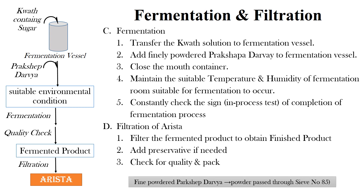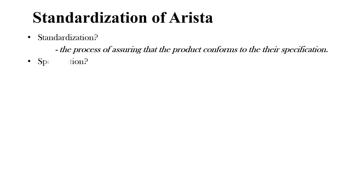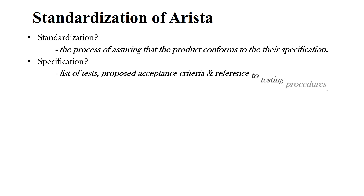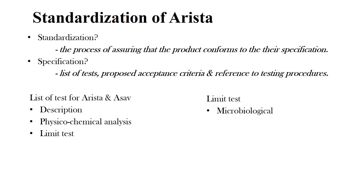This is the preparation of Arisht. Now coming to the standardization of Arisht. Standardization is the process of assuring that a product conforms to its specifications. Specifications are a list of tests, purpose, acceptance criteria, and references to the testing procedure. The list of tests for Arisht and Asava include description, physico-chemical analysis, and limit tests. The limit tests for Arisht and Asava are the same as for other formulations, such as microbial contamination limit test, heavy metal test, aflatoxin, and pesticide residue. Here we will focus mainly on description and physico-chemical analysis.